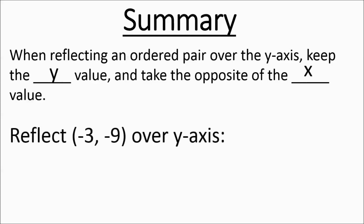Taking that same point negative 3, negative 9 and reflecting over y: you keep the y and take the opposite of x, so negative 3 becomes 3, giving you 3, negative 9. I've got another video covering this concept if you want to check that out as well. I hope this helps — best of luck to you.